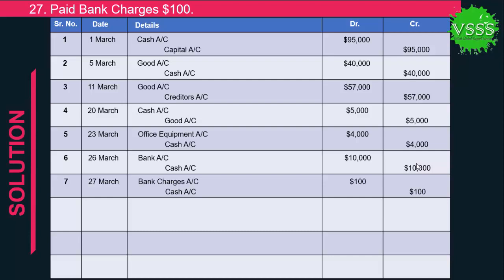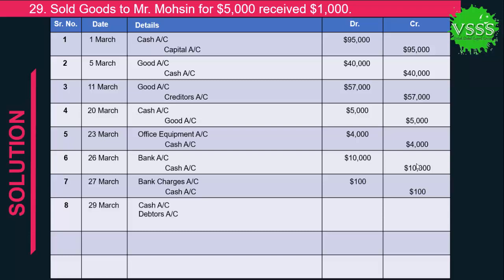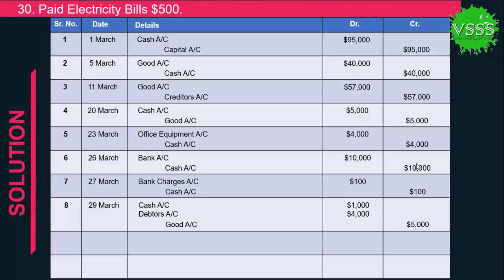Transaction 8: Sold goods to Mr. Mohsin for $5,000 and received cash $1,000. This is a compound entry affecting three accounts: cash account, debtor (Mr. Mohsin) account, and goods account. Cash account is debited by $1,000 and debtor account is debited by $4,000 (the remaining balance), while goods account is credited by $5,000.